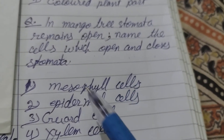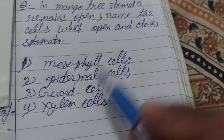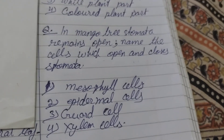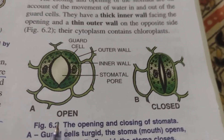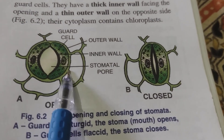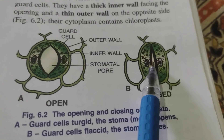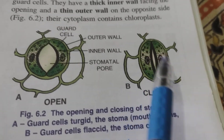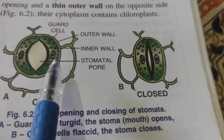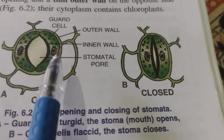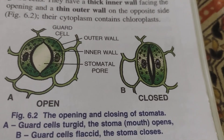The answer is guard cells. Guard cells are responsible for opening and closing the stomata. In any case, the guard cells are responsible for regulating stomata opening and closing.